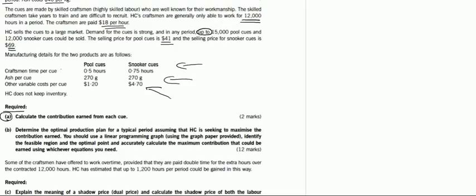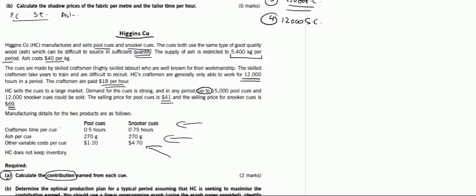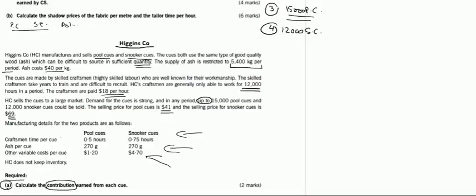Requirement number one states: calculate the contribution earned from each cue. The first requirement is relatively easy and this is reflected by the marks. It is allocated just two marks. We know that contribution is selling price minus variable costs, and we are supposed to calculate contribution for each type of cue: one of them is pool cue and the other is snooker cue.